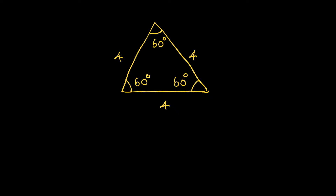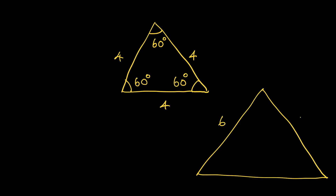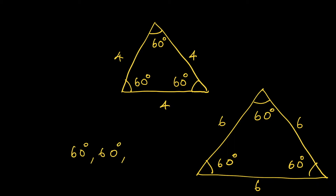Now if I scale this triangle — suppose I make the sides 6 units — what happens to the angles? The angles are still 60 degrees. So you understand one fact: irrespective of the actual values of the side lengths, the angles of an equilateral triangle are always 60-60-60 degrees.